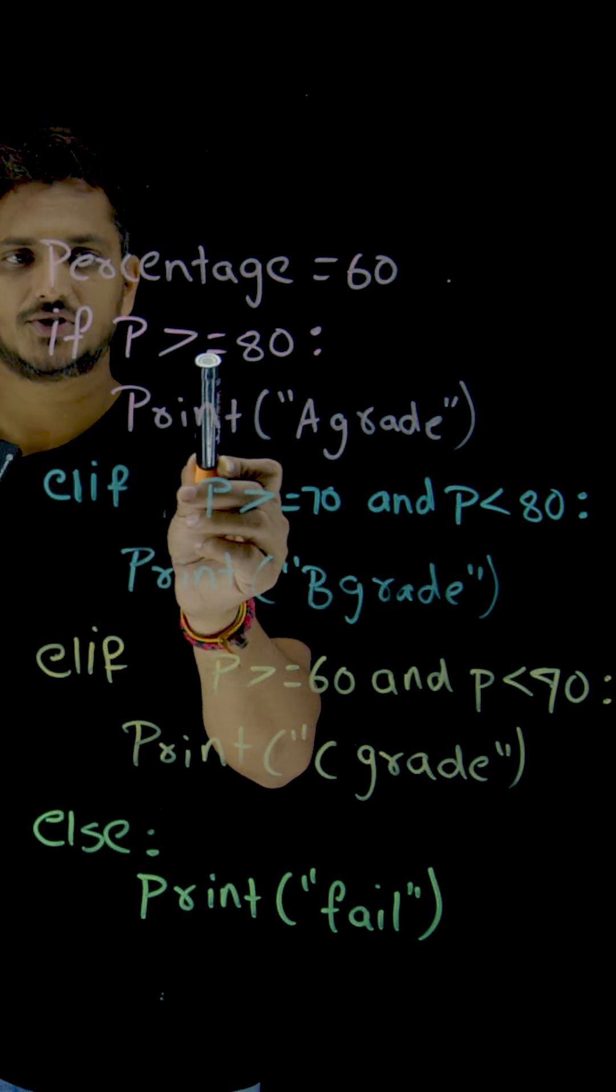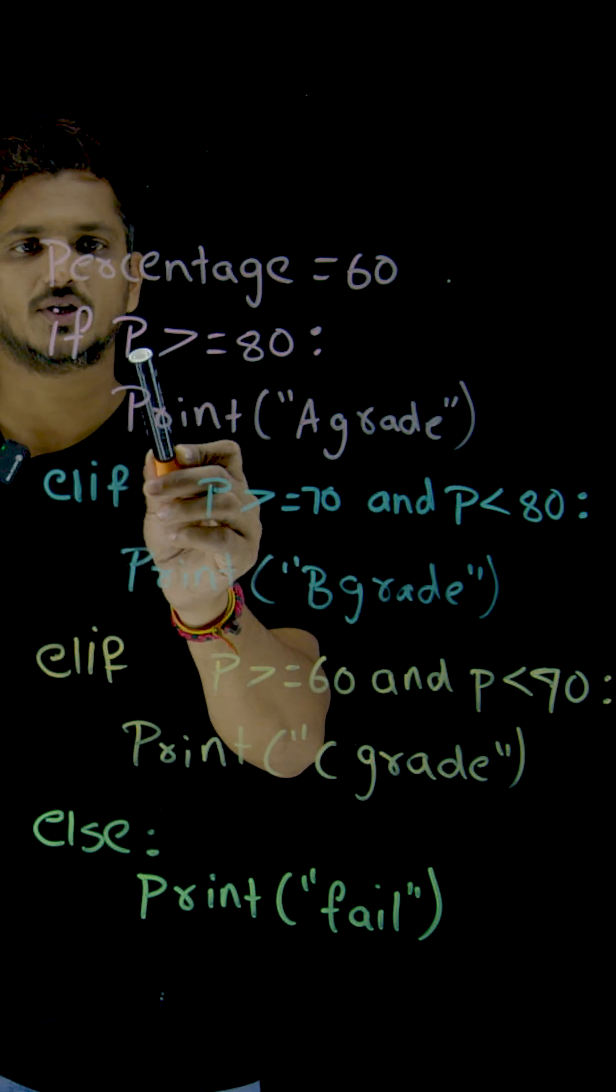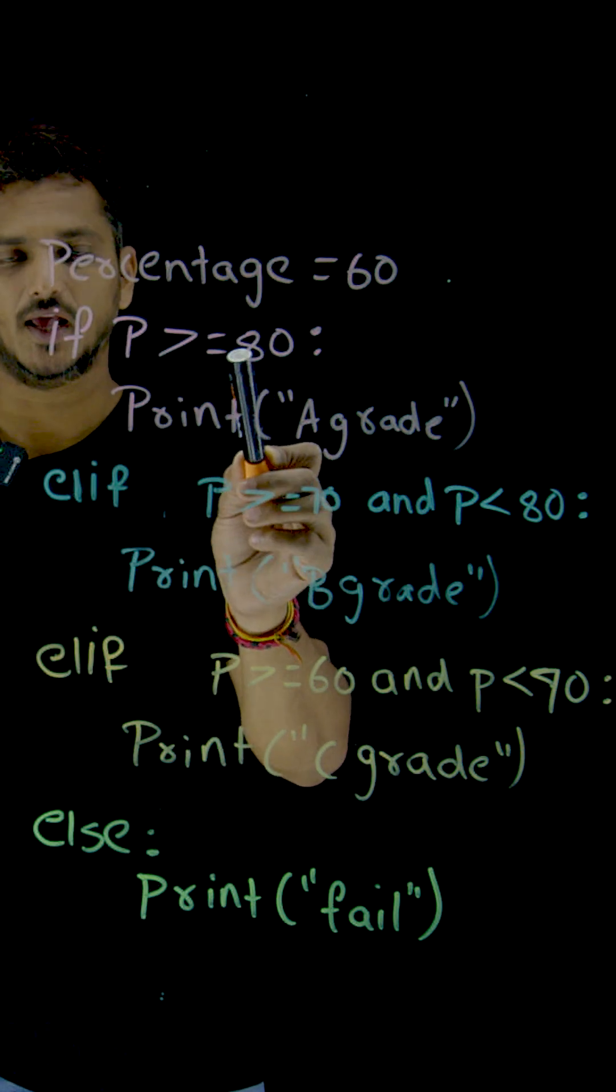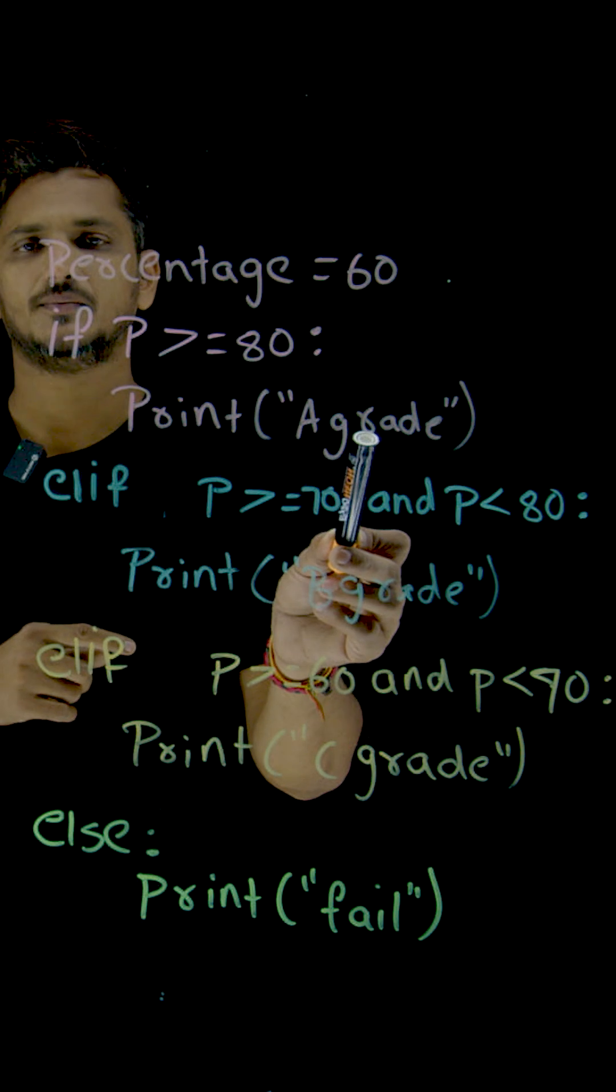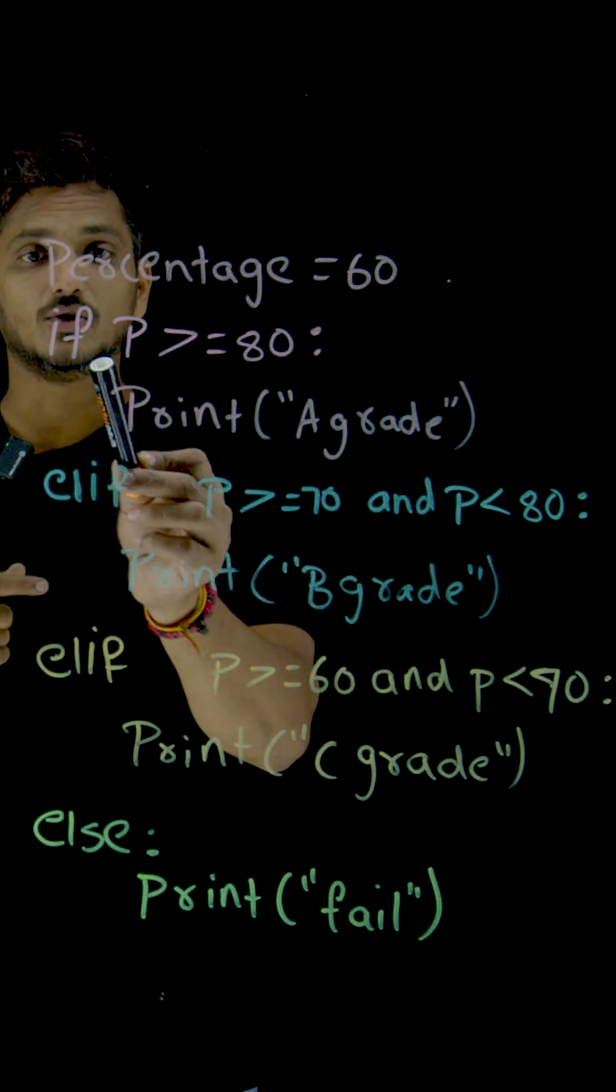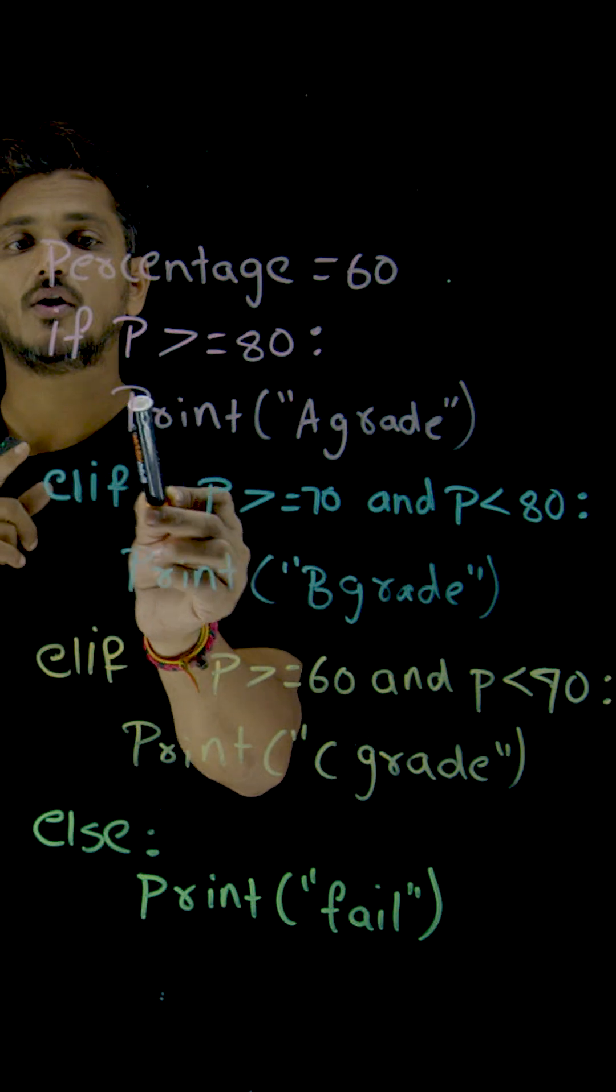If condition - if this condition is true, if P means percentage, shortcut we have written, P greater than or equal to 80. If you got above 80%, print A grade. How is it going to execute? If this condition is true, execute the body of this if.